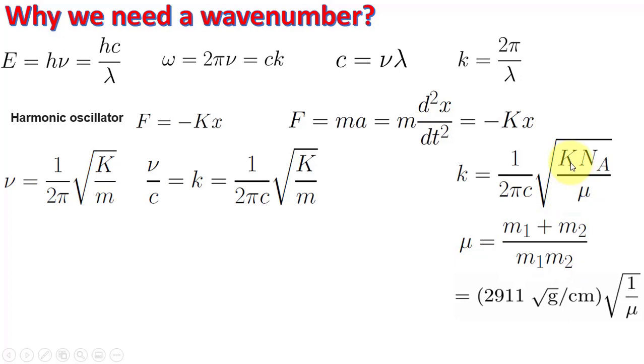Here K which is having a constant value around 5,000 per centimeter, Avogadro number and 1 over 2πc, they are all constant. If I put their constant values then this is equal to 2911 times square root of 1 over μ. So m1, I will calculate, for example if I will be calculating for carbon-carbon bond then I will write the carbon mass, carbon mass and then multiply those masses.